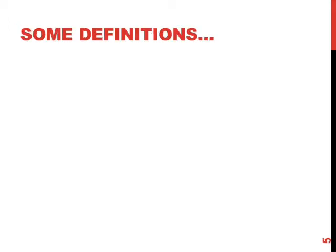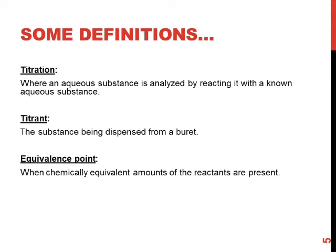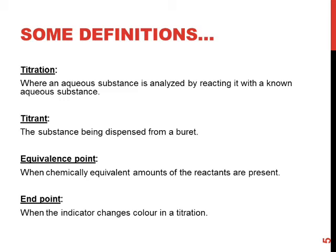Here are some definitions in case you are not familiar with titrations. A titration is where an aqueous substance is analyzed by reacting with a known aqueous substance — so when you analyze one liquid by reacting it with another. A titrant is the substance or liquid being dispensed from a burette. The equivalence point is when chemically equivalent amounts of reactants are present. The end point is when the indicator changes color — this is the main thing you will be looking for during a titration.